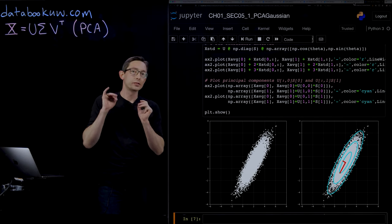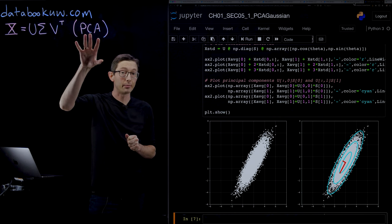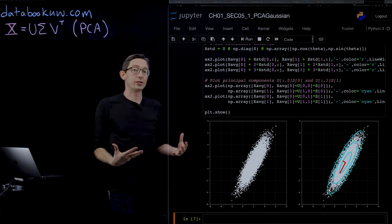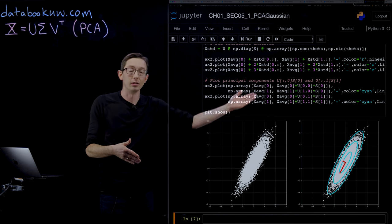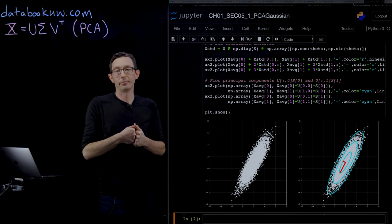Welcome back. We're talking about how to use the Singular Value Decomposition to compute the Principal Component Analysis, which gives you a statistical decomposition of data into its directions of maximum variation and minimum variation.